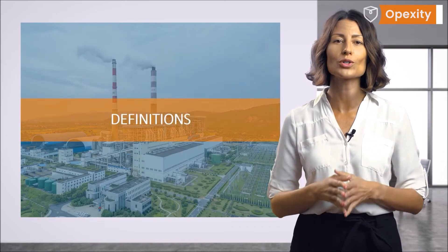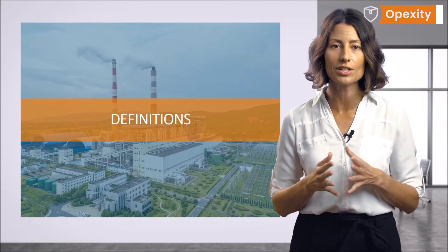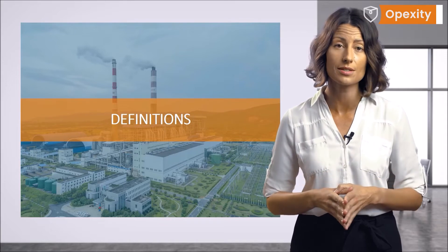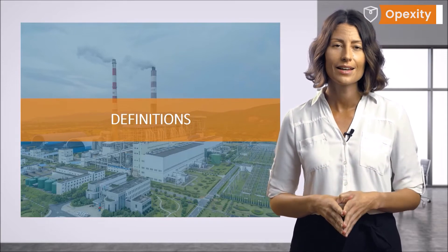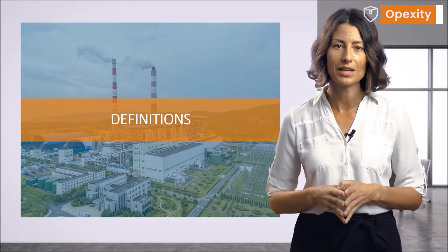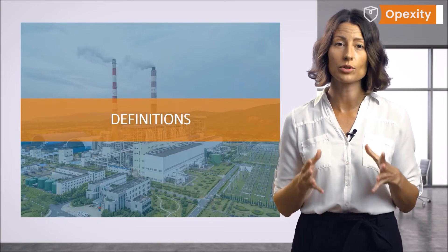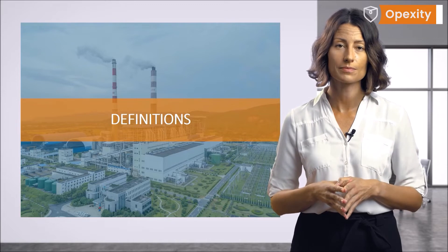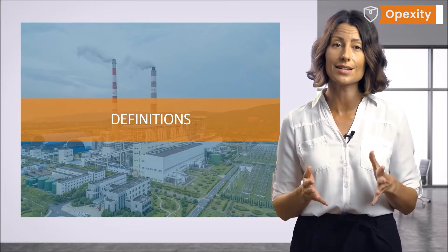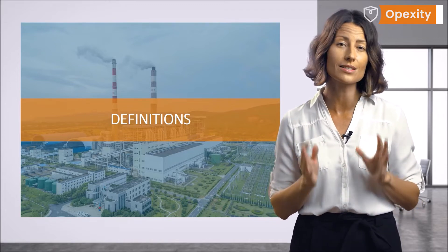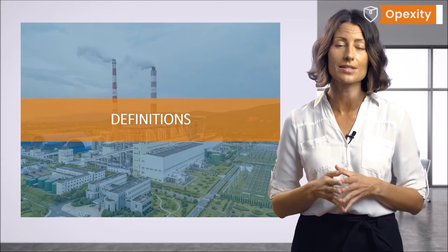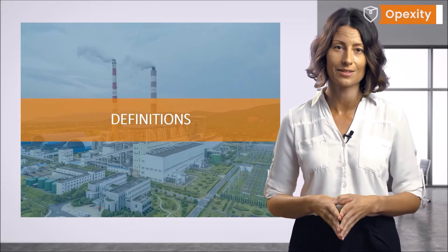Now, let's move on to the basic definitions of an environmental management system. The environmental management system involves a number of definitions, the understanding of which is necessary to properly interpret and meet the requirements of the standard.